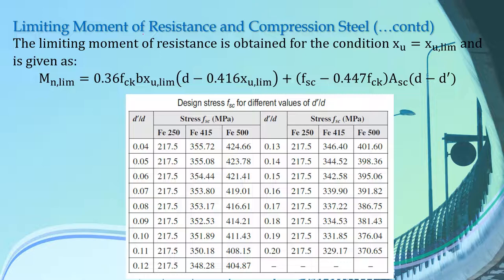Today first let us look at the limiting moment of resistance and compression steel. We have a formula which gives us the limiting moment of resistance for the condition in which the depth of neutral axis is equal to the limiting depth, that is XU is equal to XU limiting. Here FSC is the stress in concrete at the level of centroid of compression reinforcement, and this value of FSC is dependent upon the grade of steel and the ratio of D dash by D.